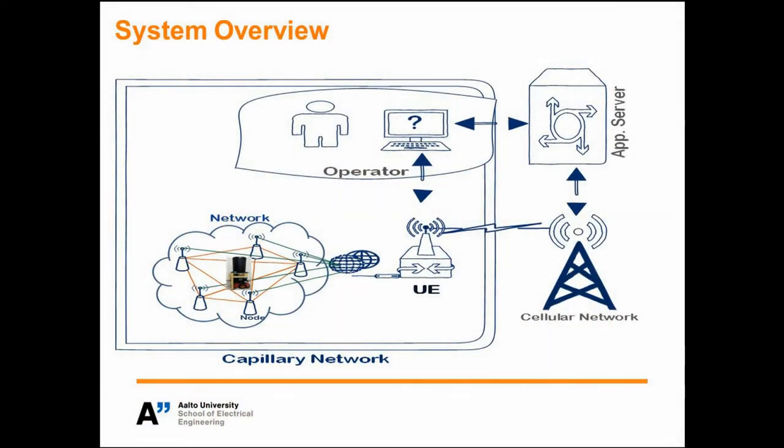This figure shows our system overview. As it is seen, we are deploying a low-power capillary network based on IEEE 802.15.4 radio. The low-power capillary network will be managed by a gateway node, which can be remotely accessed over any communication means such as LTE system. The intruder is a robot.